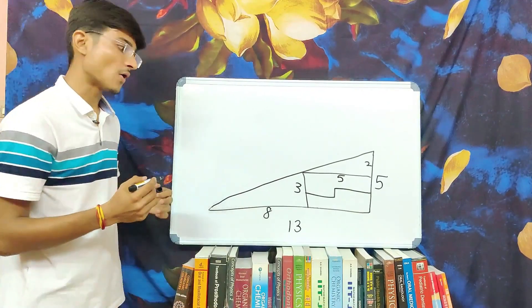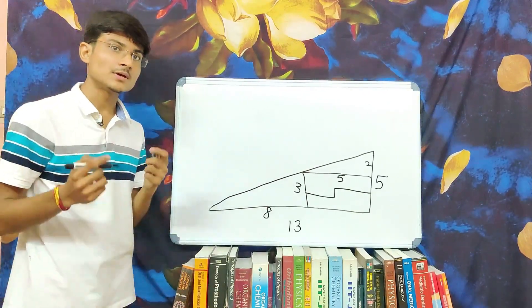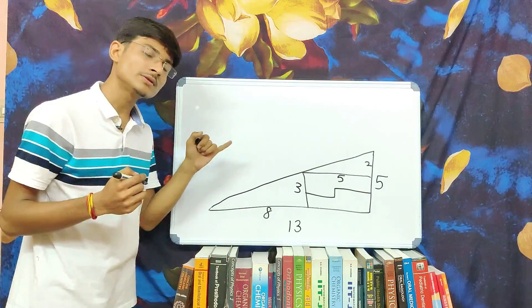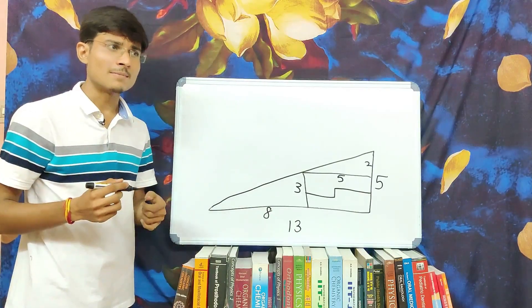These two triangles are the part of the larger triangle which means the slope of the hypotenuse of all the three triangles should be same. But is it so?